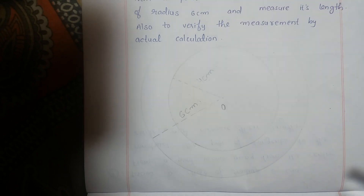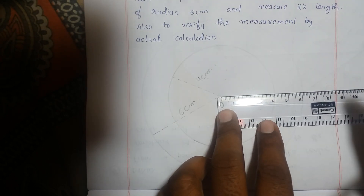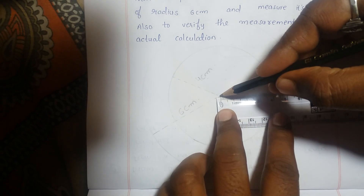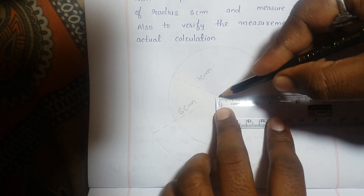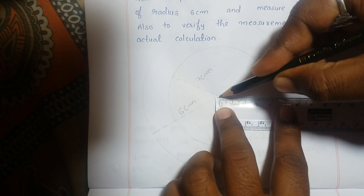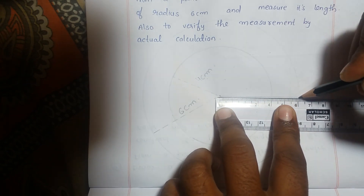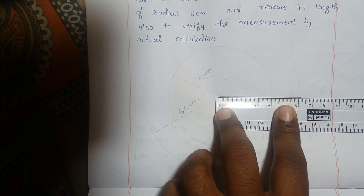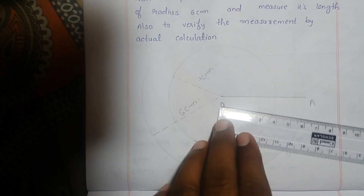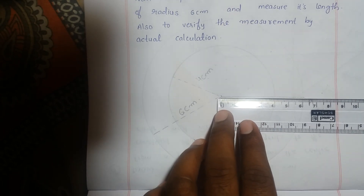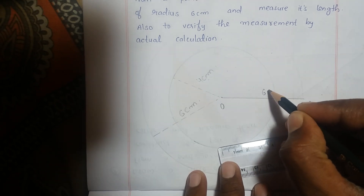Now connect from the center to any one point on the outer circle. Label this point A. After connecting, measure the length — it is 6 cm.